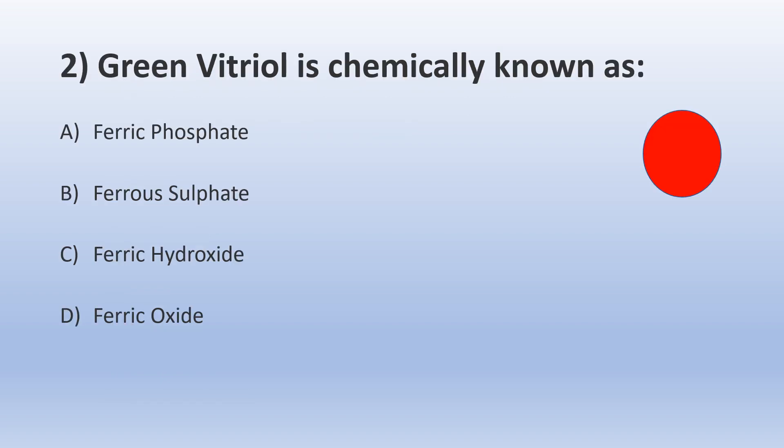Let's move on to the next question. Green vitriol is chemically known as: A) Ferric Phosphate, B) Ferrous Sulfate, C) Ferric Hydroxide, and D) Ferric Oxide.